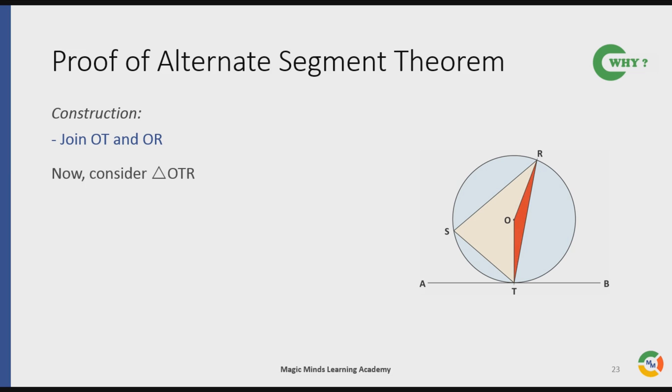Okay, now consider this triangle. In this triangle, OR is equal to OT as both are radii of the circle. Hence triangle OTR is an isosceles triangle. Therefore, angle OTR is equal to angle ORT. Let it be equal to x degrees.